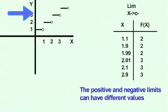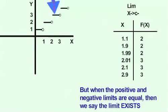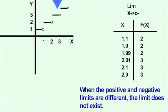The positive and negative limits can have different values. But when the positive and negative limits are equal, we say the limit exists. When the positive and negative limits are different, the limit does not exist.